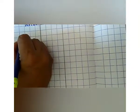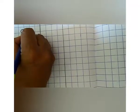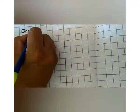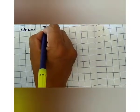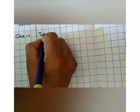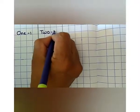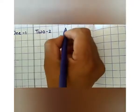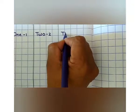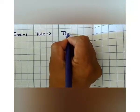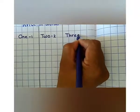O, N, E — one. T, W, O — two. T, H, R, double E — three.